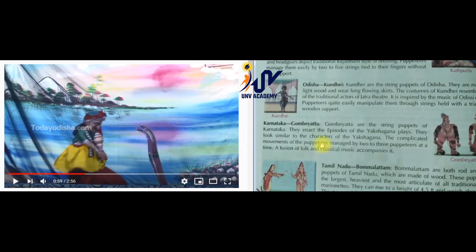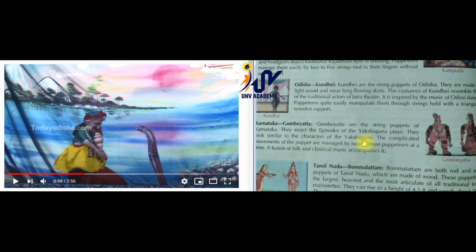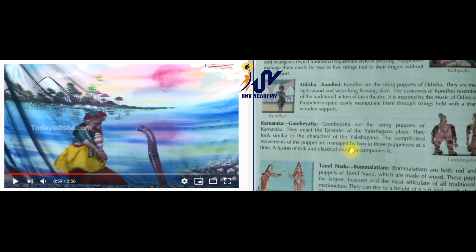Next we have Karnataka Gombe Yata. These are the string puppets of Karnataka. They enact the episodes of Yaksha Gana plays - Yaksha Gana is a famous play in Karnataka. These puppets look similar to the characters of Yaksha Gana. The complicated movements of the puppets are managed by two or three puppeteers at a time, and a fusion of folk and classical music accompanies it.